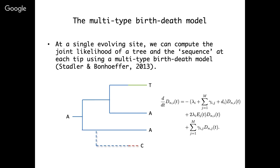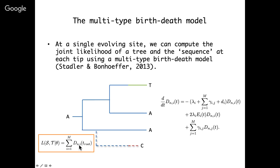If we track this probability density D_n,i for the probability density of the observed tree going all the way back to the root, we can then sum over all possible root states i. This probability density gives us the joint likelihood we actually want — allowing us to compute the joint likelihood of the sequence states observed at the tips as well as the phylogeny itself.